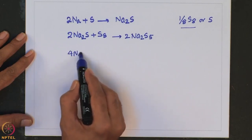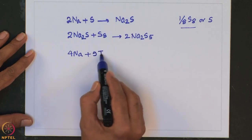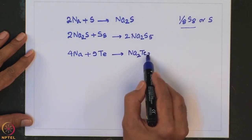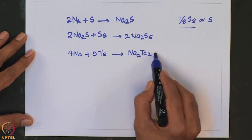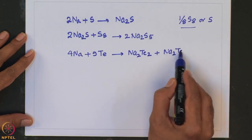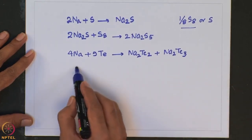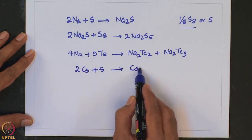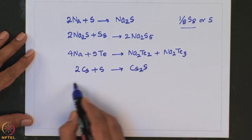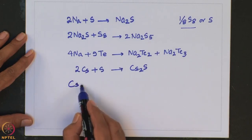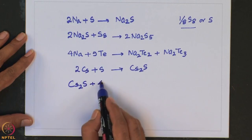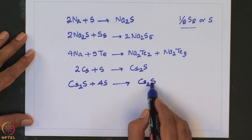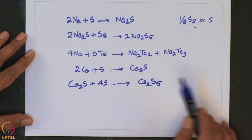Sodium can also react with tellurium to give a mixture of Na2Te2, similar to sodium peroxide, and Na2Te3. Cesium also reacts in a similar fashion — cesium sulfide reacts with excess sulfur to give Cs2S5, analogous to the sodium reaction.